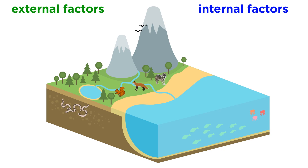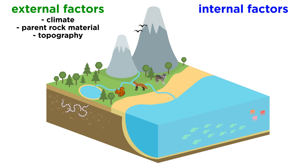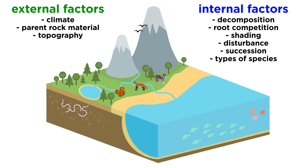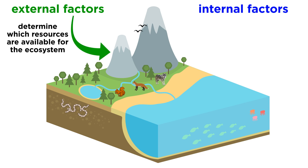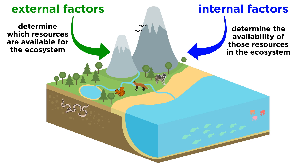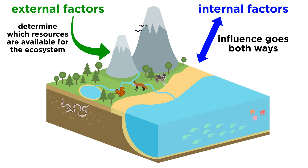Ecosystems are controlled by both external and internal factors. External factors such as climate, the parent rock material that forms the soil, and topography control the overall structure of an ecosystem, but are not themselves influenced by the ecosystem. Internal factors are controlled, for example, by decomposition, root competition, shading, disturbance, succession, and the types of species present. While the kinds of resources made available to the ecosystem are generally controlled by external processes, the availability of these resources within the ecosystem is controlled by internal factors. Therefore, internal factors not only control ecosystem processes, but are also influenced by them.